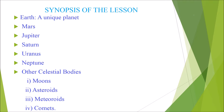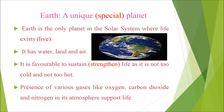We also have other celestial bodies like moons, asteroids, meteoroids and comets. Now we are going to see the first topic: Earth, a unique planet. Unique means special. Earth is the only planet in the solar system where life exists. It has water, land and air, and it is favorable to sustain life, as it is not too cold and not too hot. The presence of various gases like oxygen, carbon dioxide, and nitrogen in its atmosphere supports life.